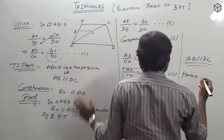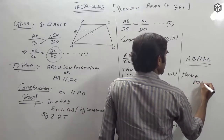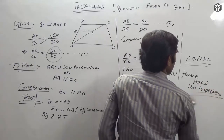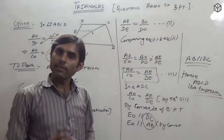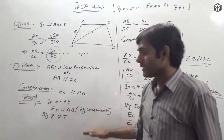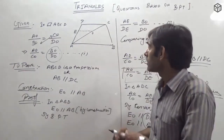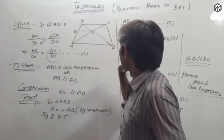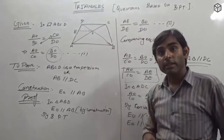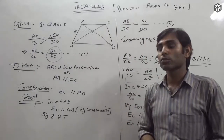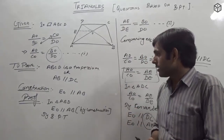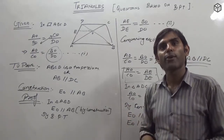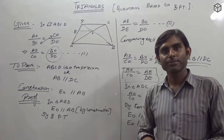Since AB is parallel to DC, which means ABCD is a trapezium. Hence proved. Clear friends? So practice this on your own. If you have any doubts, please ask in the comments. Please share this video and if you like it, please like it so we can make more good videos. Thank you friends.